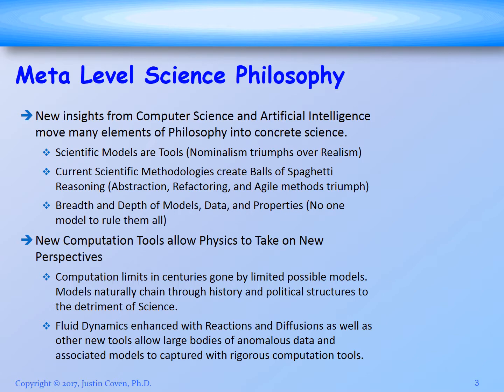One of the biggest changes from the conventional map is the removal of philosophy. With meta-level science, computer science and artificial intelligence as concrete science replace many elements of philosophy. Three of the basic elements replaced are that scientific models are tools. The debate between nominalism — a tool-based view — versus realism is overwhelmingly in favor of nominalism, because when you actually try to implement things from a computer science perspective, there's far too much data that is dropped and too many transformations required to move from the real world to what sits in the human mind, making the possibility of realism basically zero.